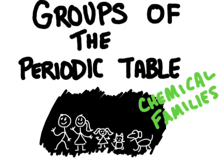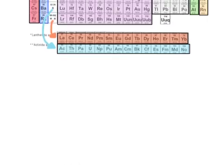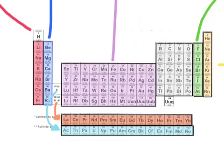In this video we're going to learn about the groups of the periodic table. These are also known as chemical families and these can be found as columns in the periodic table.